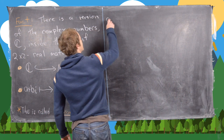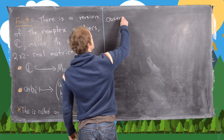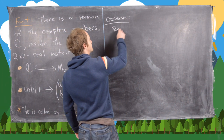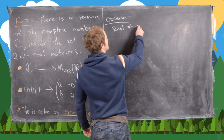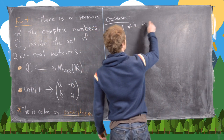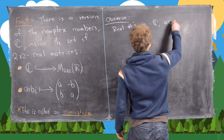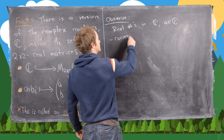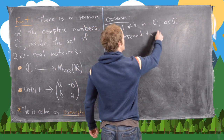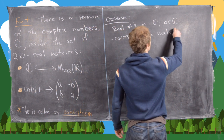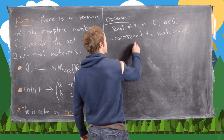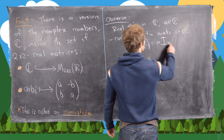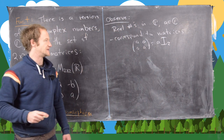Let's observe some things. Real numbers in ℂ — if we take a number a in ℂ — correspond to matrices of the form [a, 0; 0, a]. In other words, these are multiples of the 2x2 identity matrix.